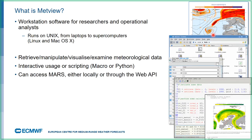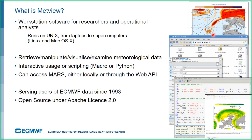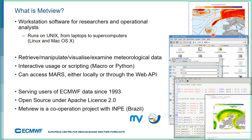Metview has a built-in MARS client. If you want to access our archive and you're running Metview at ECMWF, you get direct MARS access. If you're running outside ECMWF, it goes through the web API, which may give you slower retrievals. Metview is mature software — version 1.0 came out in 1993 — and it's still under active development. It's open source and is a cooperation project with the Brazilian Space Institute, INPE.